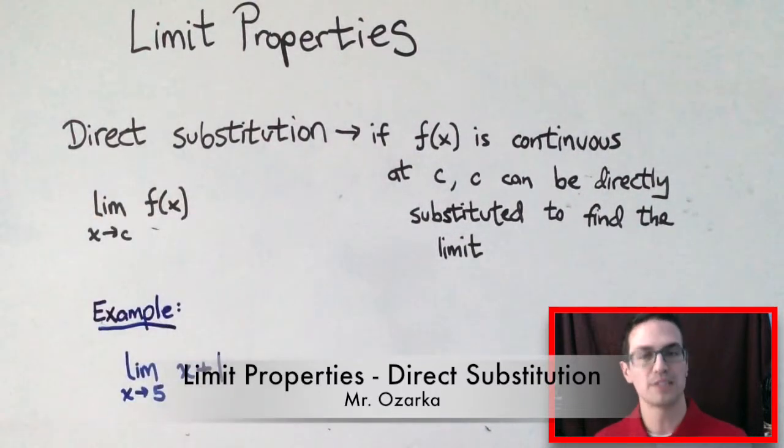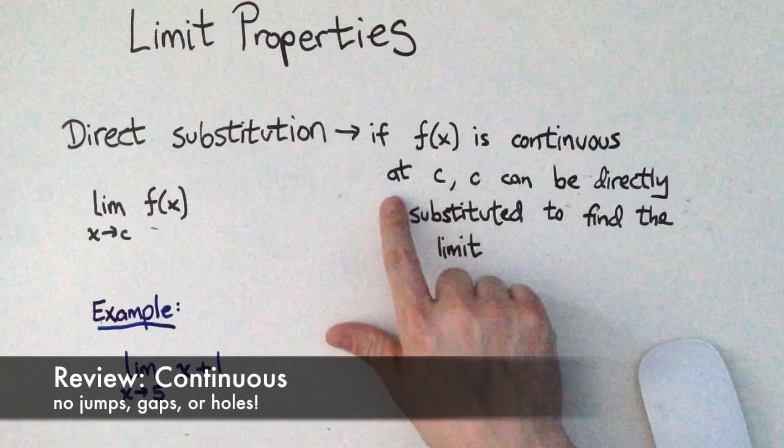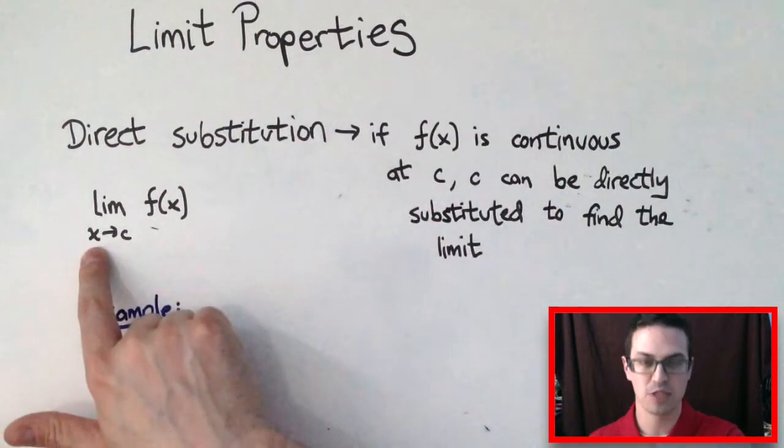Now, what direct substitution states is that if a function is continuous—continuous means there's no jumps, gaps, or holes—at C, and then C is what this limit is going to.